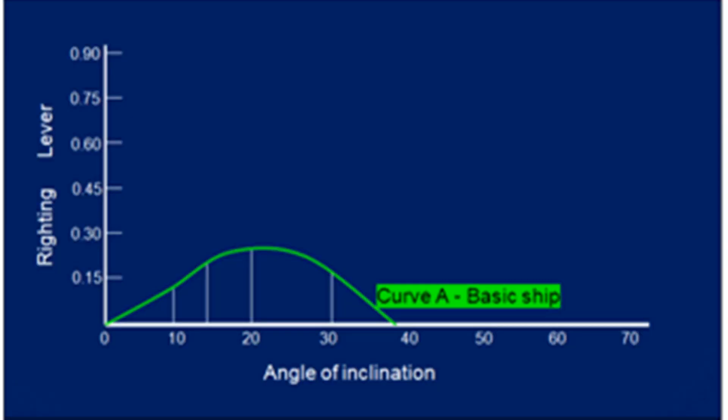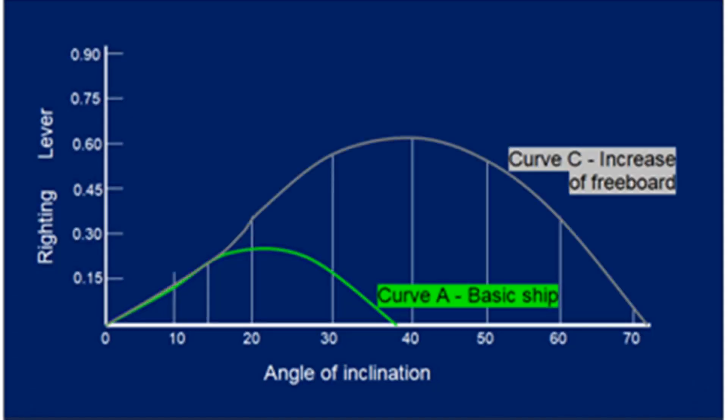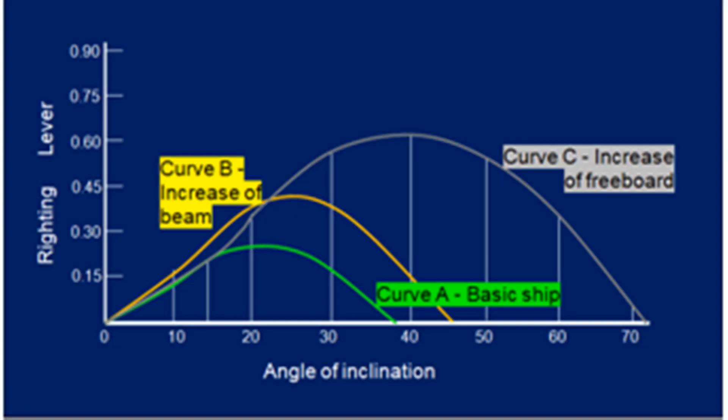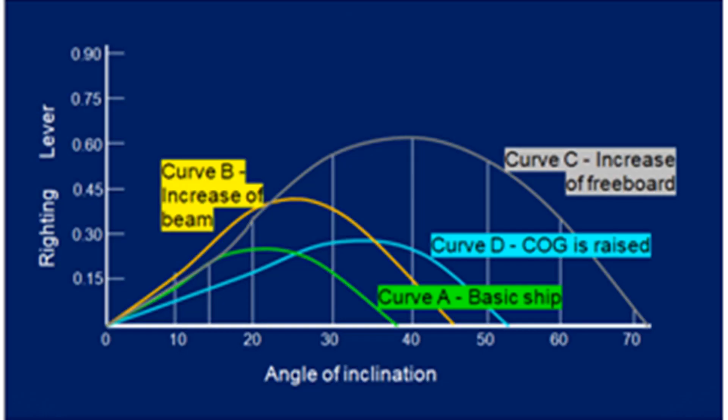Hello, this is Captain Chaudhary. Today I am going to speak about what is the effect of form on the GZ curve. Like for a given shape, if we just change the freeboard, what happens to the GZ curve? If we just change the draft, what happens to the GZ curve? If we change the beam of the vessel, or if we shift the position of center of gravity, what happens to the GZ curve?